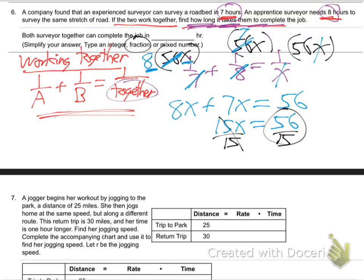If you're interested in making that more real — if you want a decimal, it's about 3.73. So that's how many hours it would take them together. It takes one person 7 hours alone, the other 8 hours alone, but working together just 3.73 — just under 4 hours. They want the fraction version, but I just wanted to give you a real-life feel for what that answer meant.